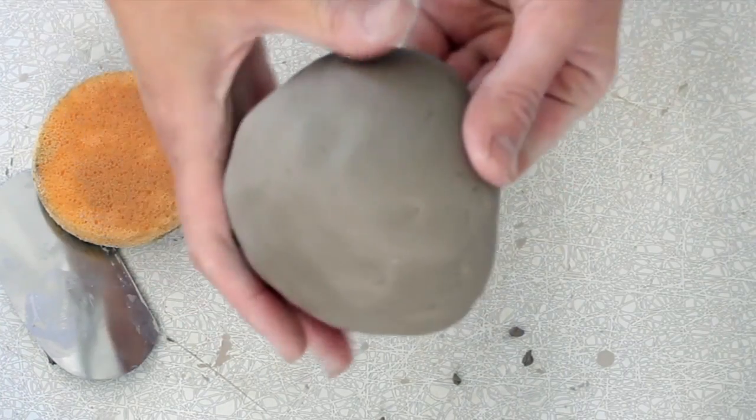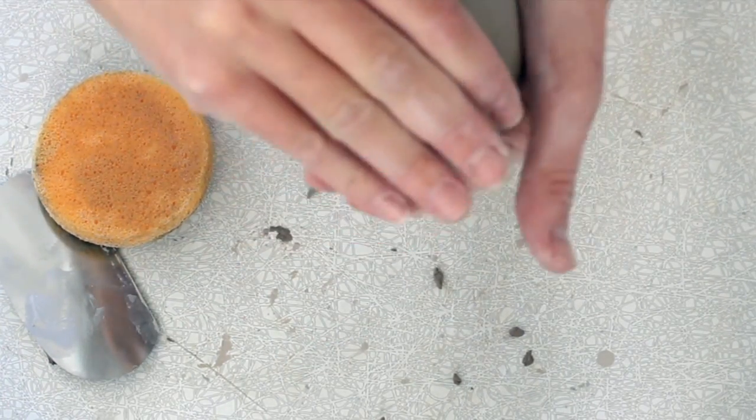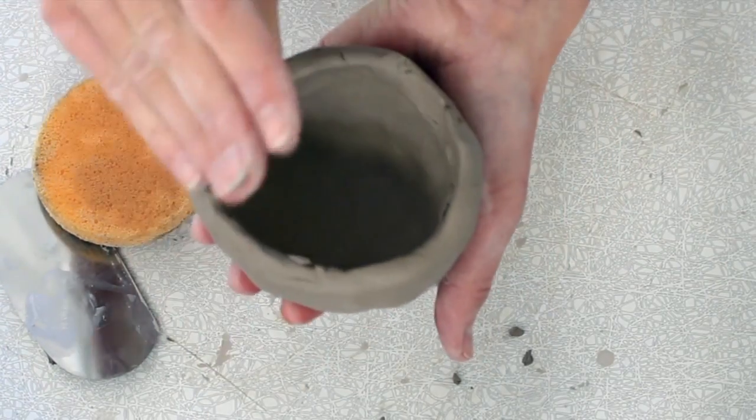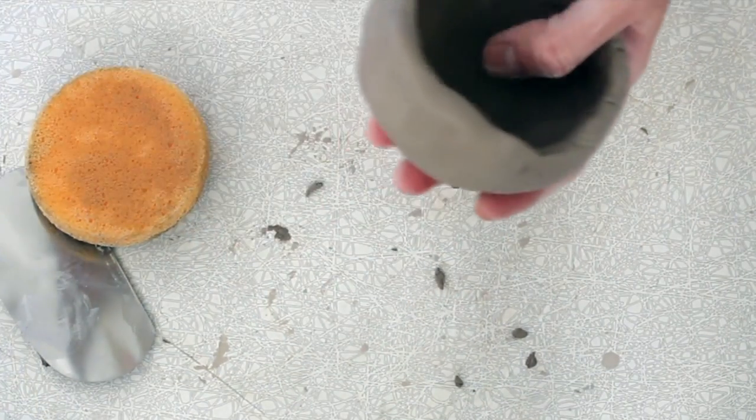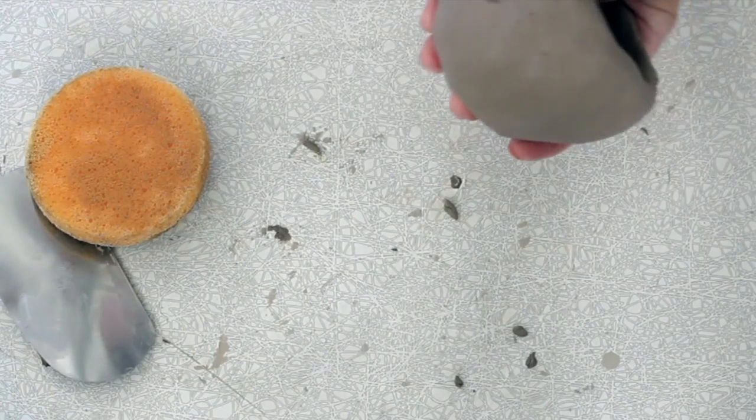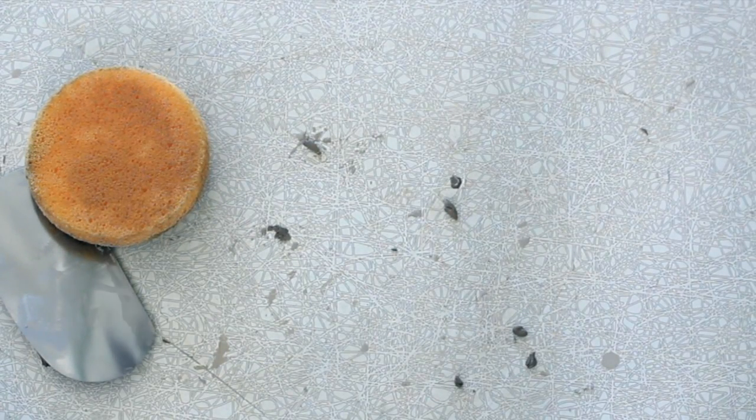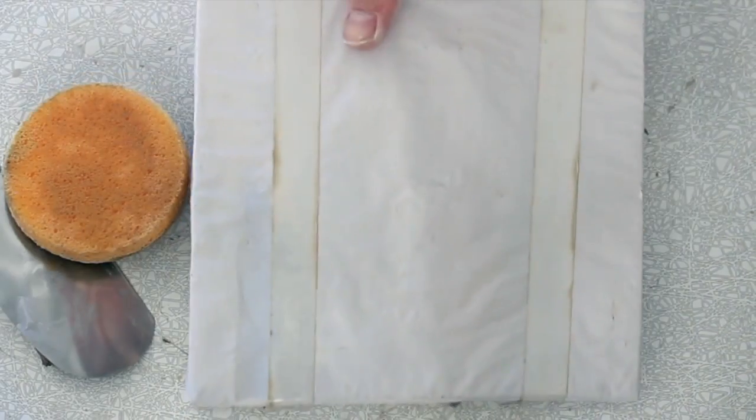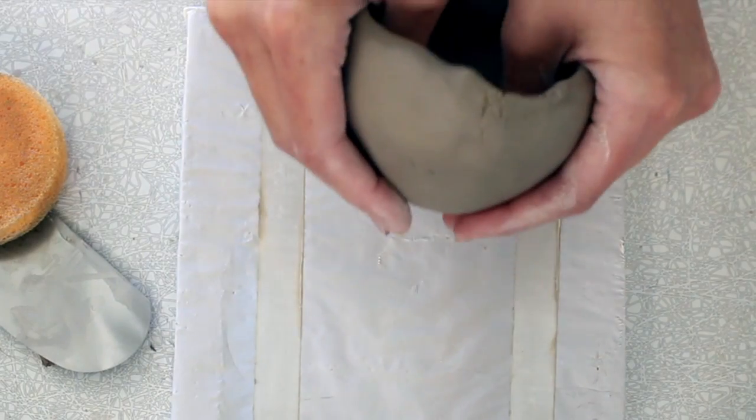Once you've got the head the way that you want it to be, I kind of want to round mine in just a little bit more. So I'm kind of pulling those edges inward. I suggest using a piece of paper or a bat. The bats are just boards which we have plastic on. This is what we call a bat. It's for storing clay.